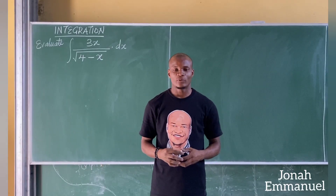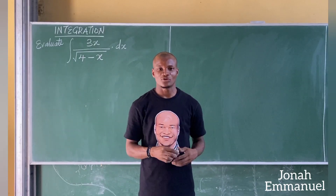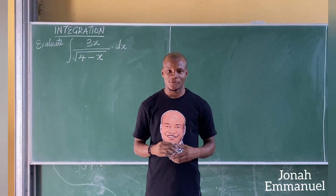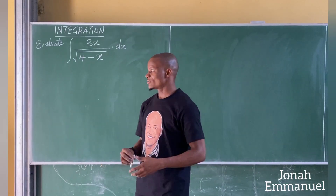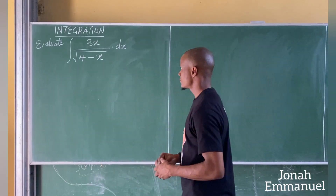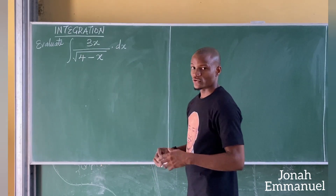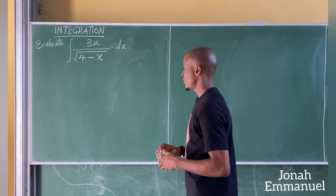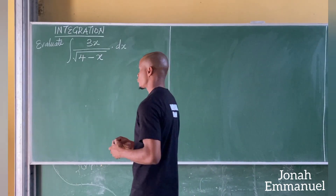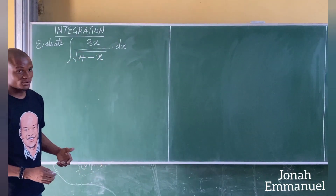We'll take another example on integration using the substitution method. Let's say I'm asked to integrate 3x all over the square root of (4 minus x) dx. For this case I'll also use the substitution method. So I'll say: let u be equal to the square root of (4 minus x), such that if I square both sides, u squared equals 4 minus x.